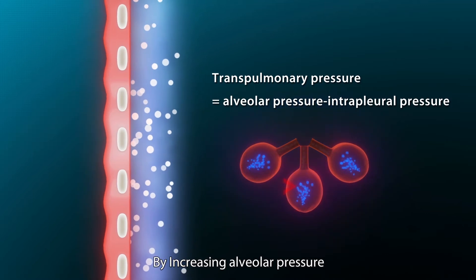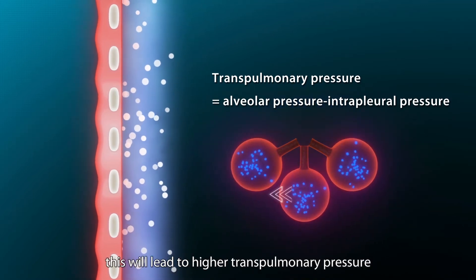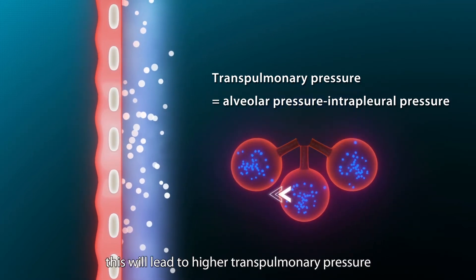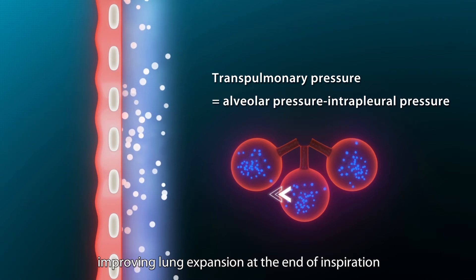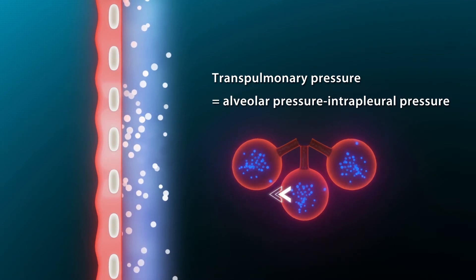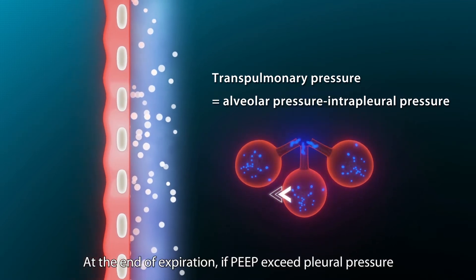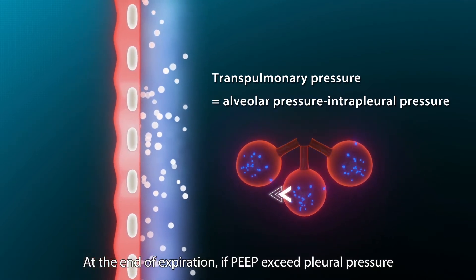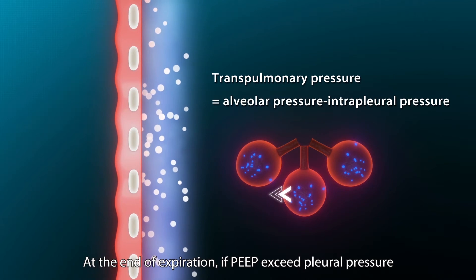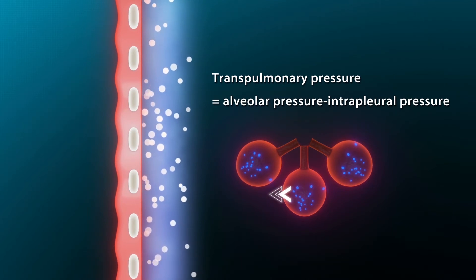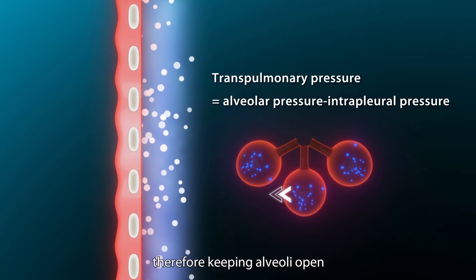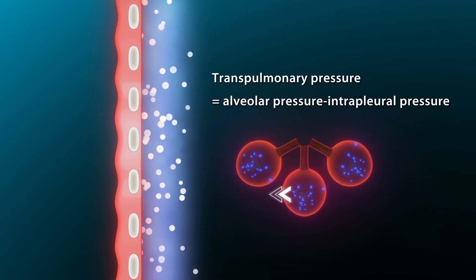By increasing alveolar pressure, this will lead to higher transpulmonary pressure, improving lung expansion at the end of inspiration. At the end of expiration, if PEEP exceeds pleural pressure, the transpulmonary pressure will become positive again, therefore keeping alveoli open.